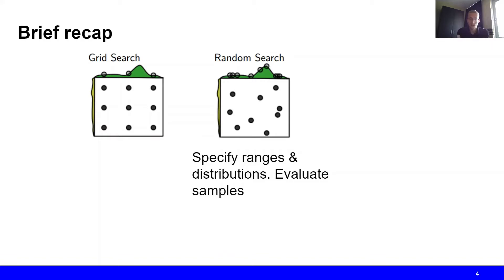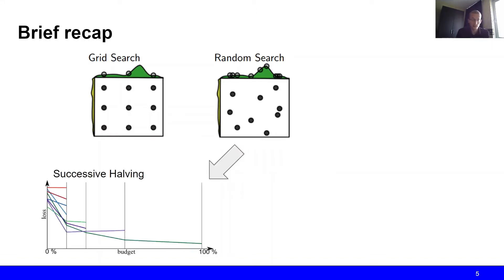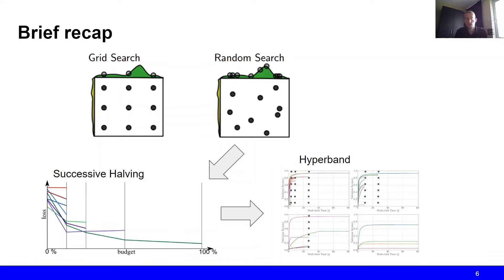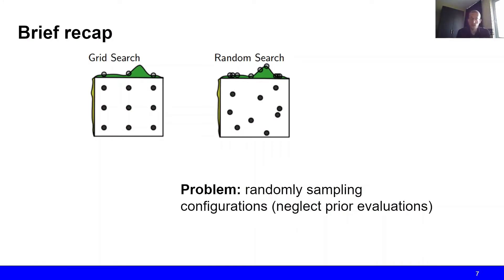Random search has given inspiration to, amongst other things, successive halving, where we perform multiple rounds and in every round discard the worst half or more of the configurations. Successive halving has in turn inspired hyperband, which simply performs multiple brackets of successive halving. Now a limitation of all of these techniques is that they randomly sample the configurations they're going to evaluate, which means they also neglect prior evaluations if they have them.